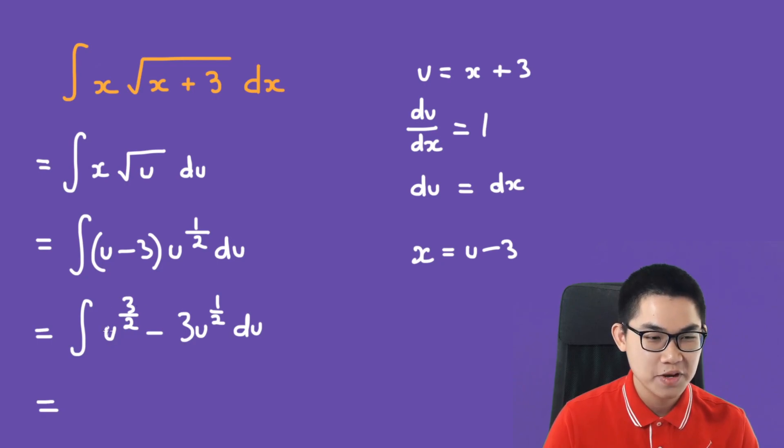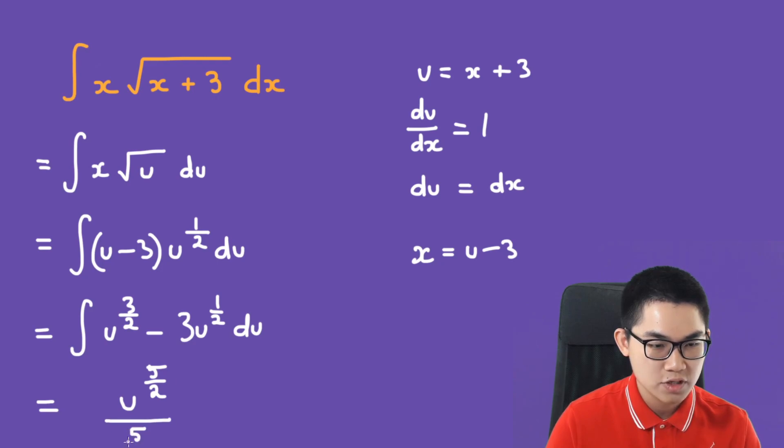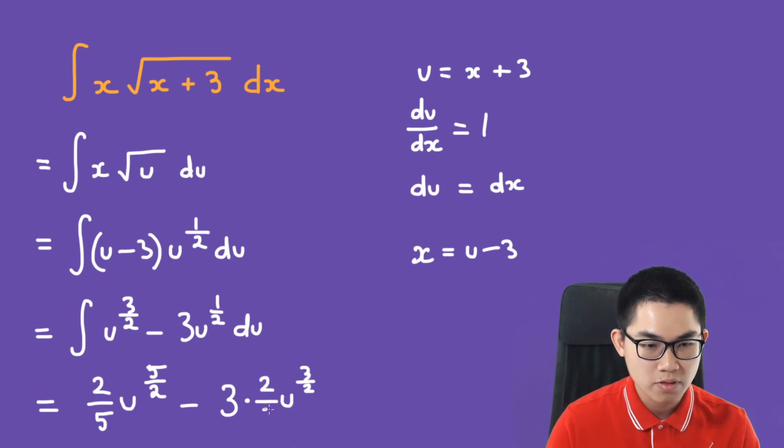And what is the antiderivative of this? It's going to be u to the power of 5 over 2 divided by 5 over 2, which is the same as multiplying by 2 over 5. And here we have 3 times u to the power of 3 over 2 divided by 3 over 2, which is the same as multiplying by 2 over 3 plus c.